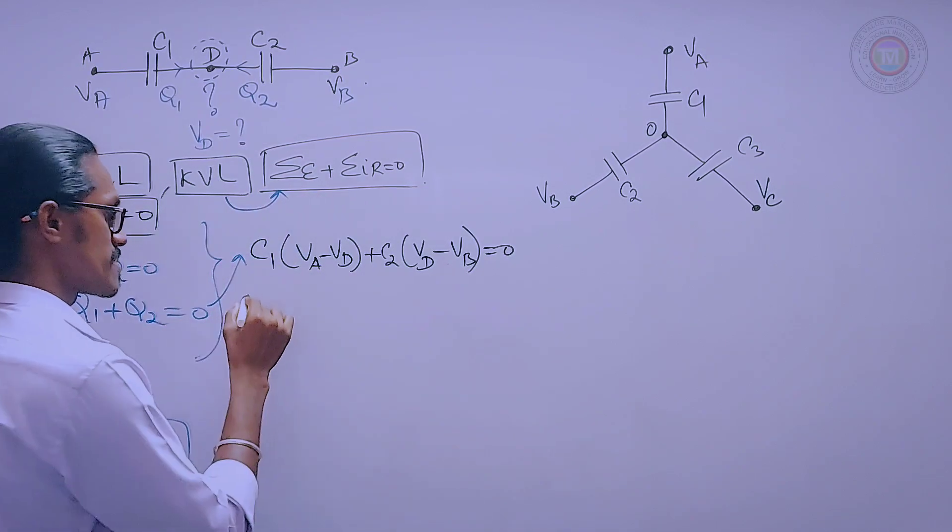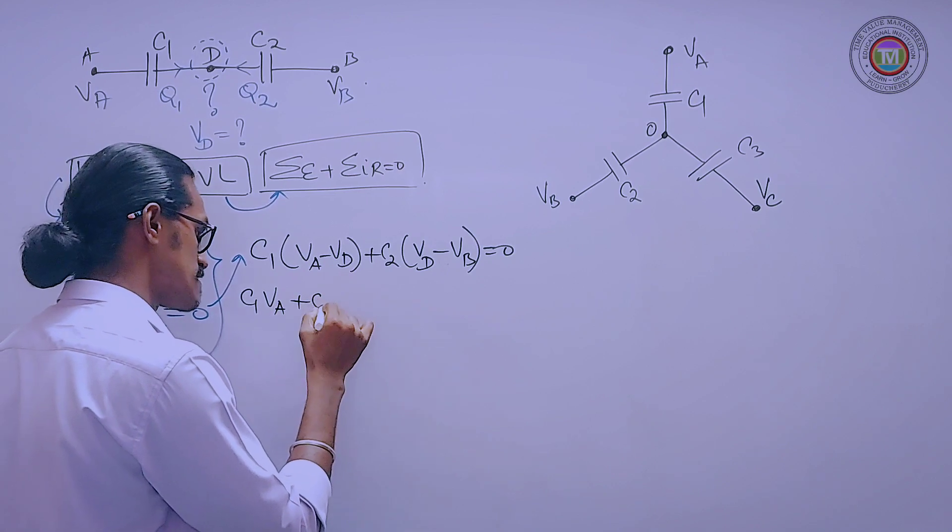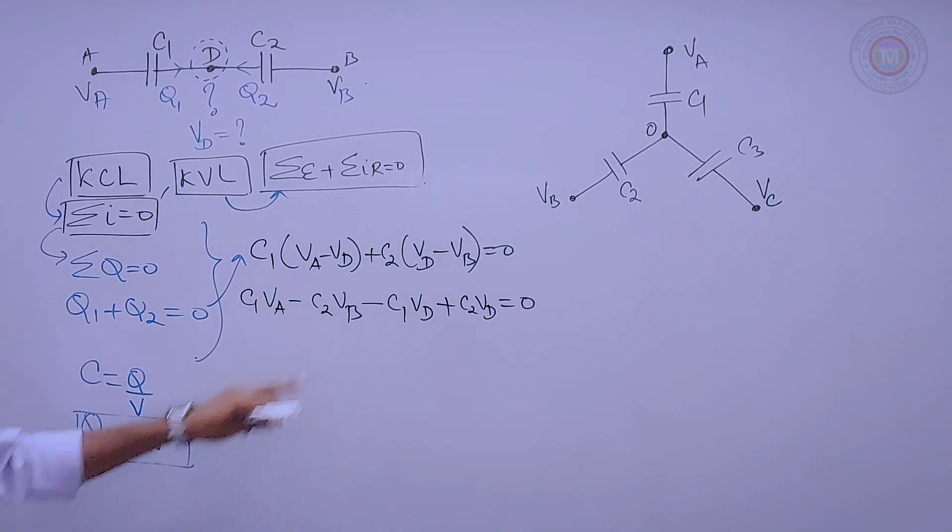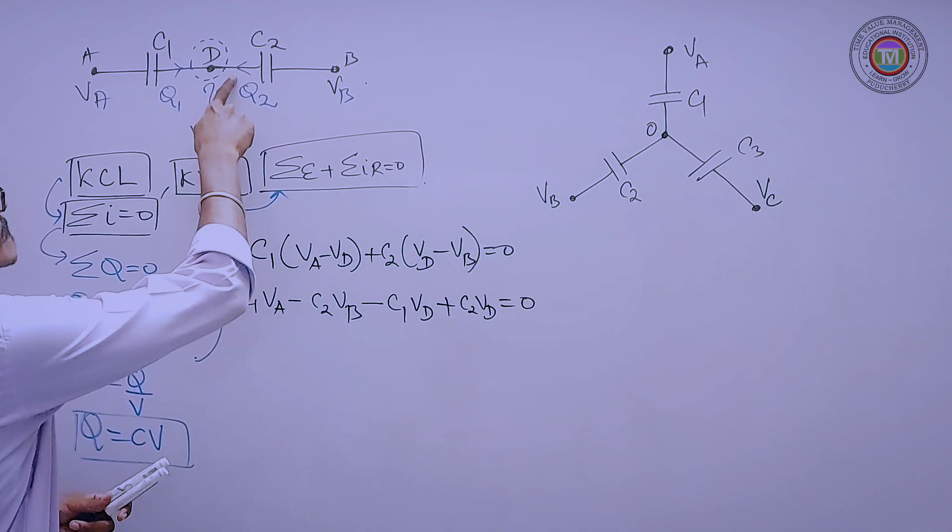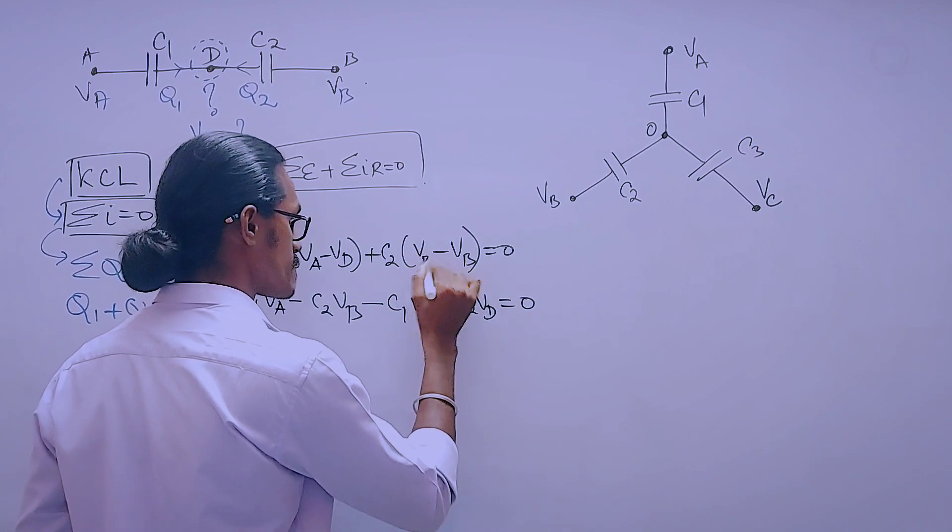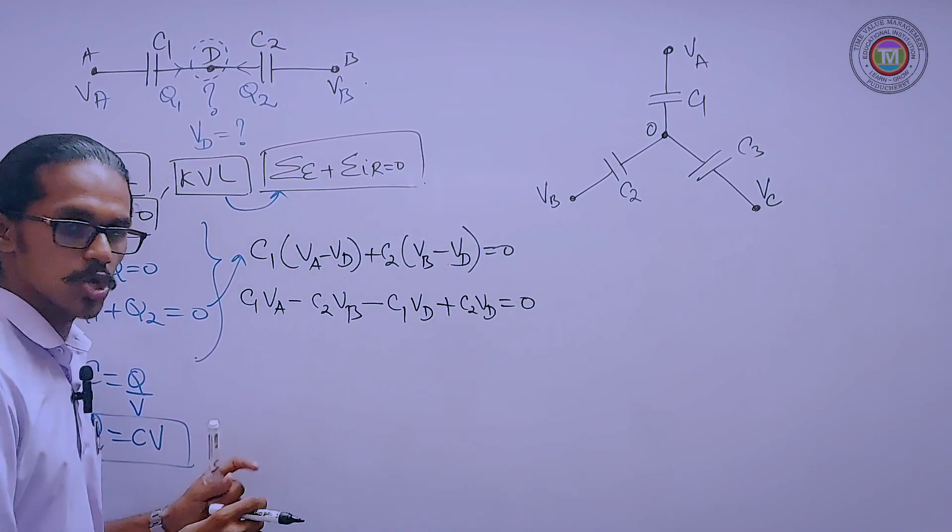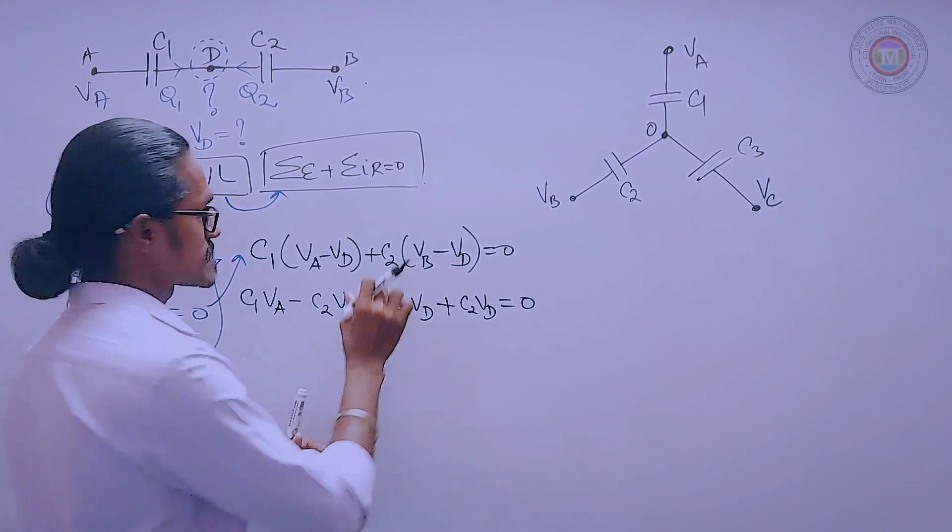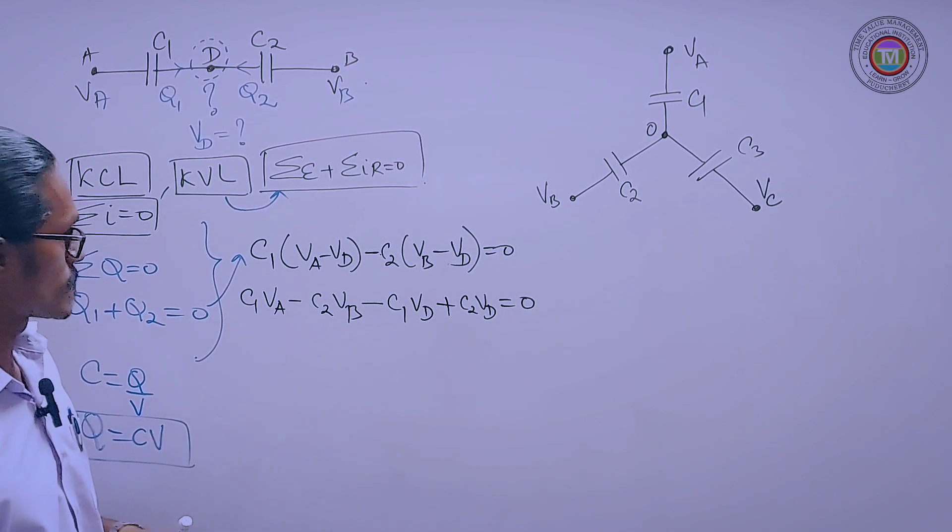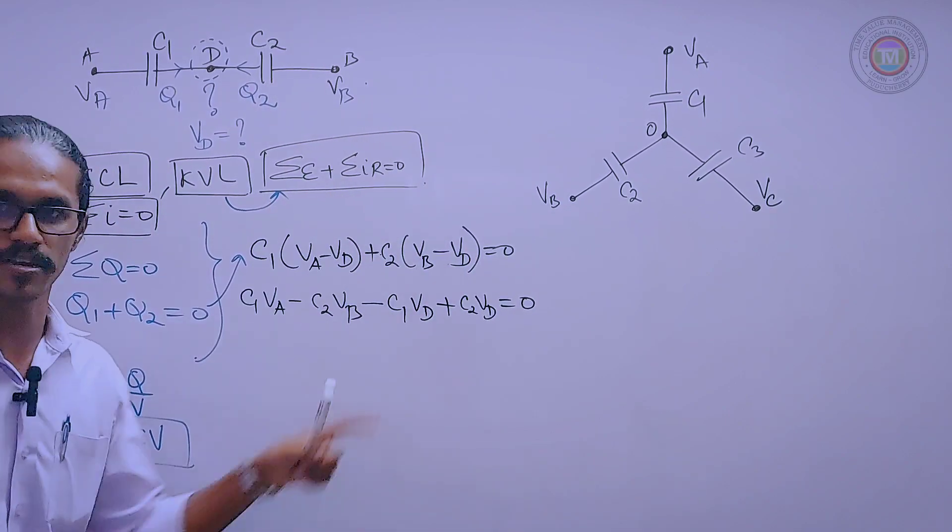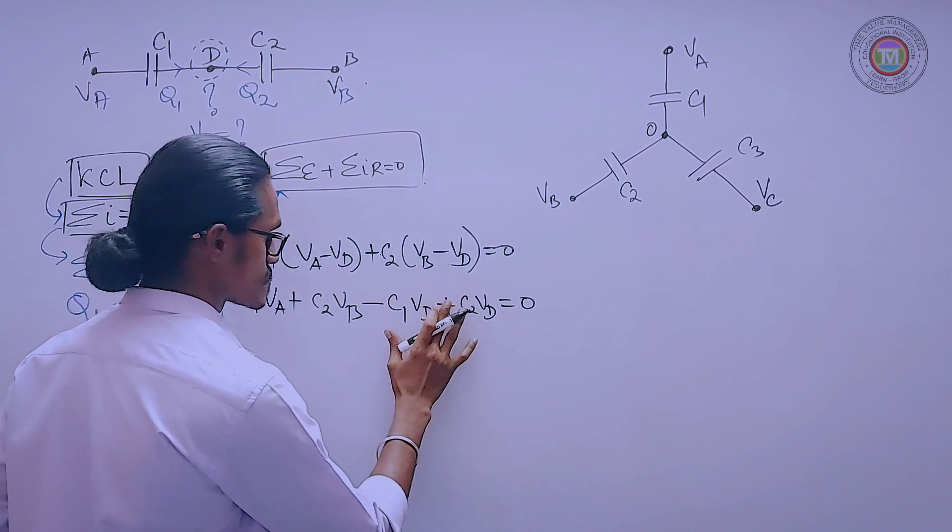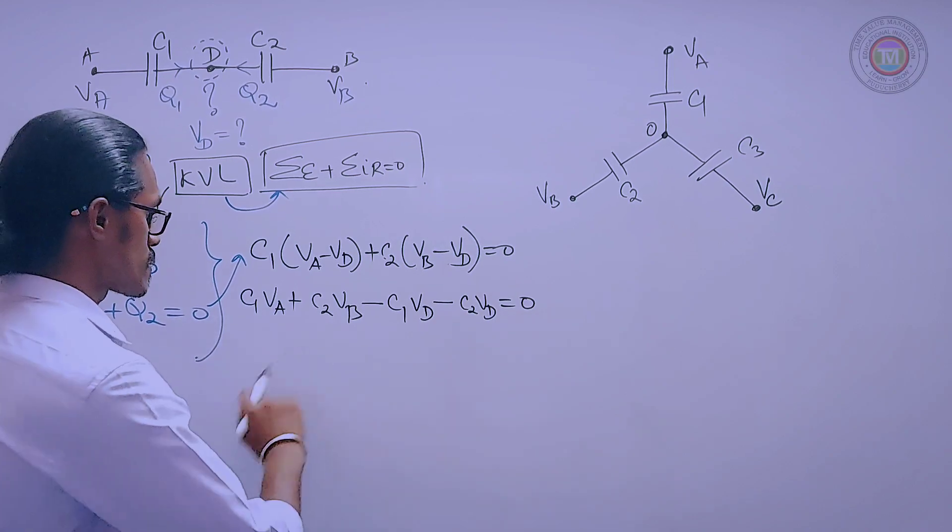Simple rearrangement. It is C1 VA plus C2... both are said to be in minus form. So a common factor.